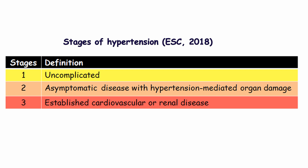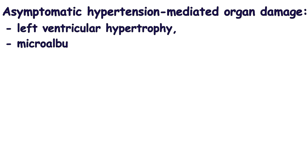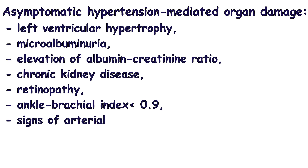According to the European Society of Cardiology, there are three stages of hypertension. Stage 1: uncomplicated. Stage 2: asymptomatic disease with hypertension-mediated organ damage. Stage 3: established cardiovascular or renal disease. Asymptomatic hypertension-mediated organ damage involves left ventricular hypertrophy, microalbuminuria or elevation of albumin-creatinine ratio, chronic kidney disease, retinopathy, ankle-brachial index less than 0.9, and signs of arterial stiffening.